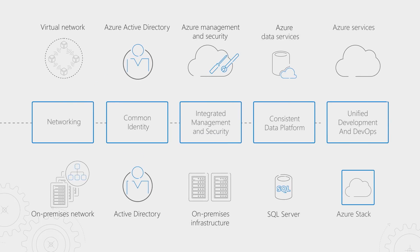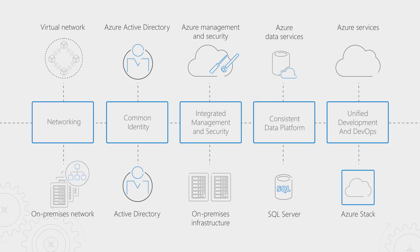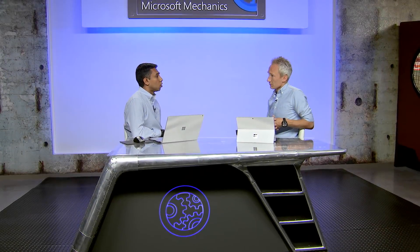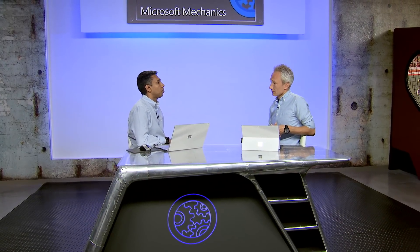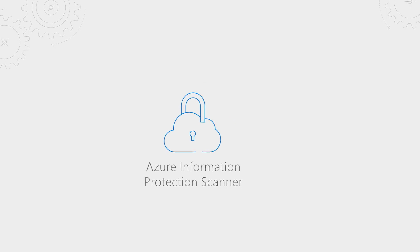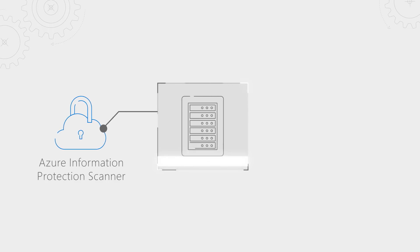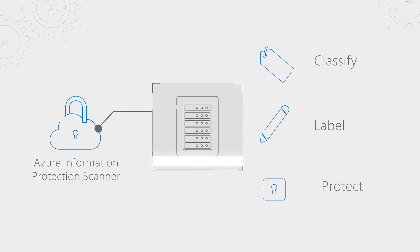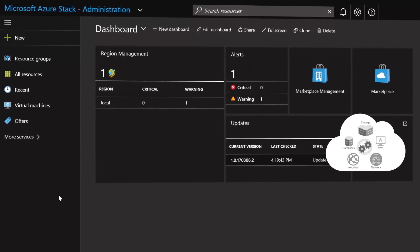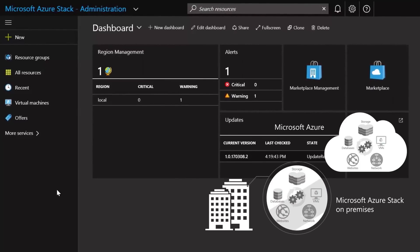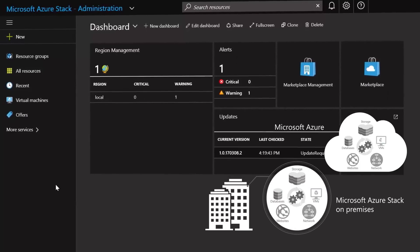Azure offers a consistent hybrid approach across identity and access management for integrating with your data, and helps you protect and access data wherever it resides. For example, the Azure Information Protection Scanner can scan your on-premises file share or SharePoint servers to discover sensitive data types, classify and label them for increased data governance. At the other end of the spectrum, Azure Stack allows you to use Azure services but keep everything in your own data center.